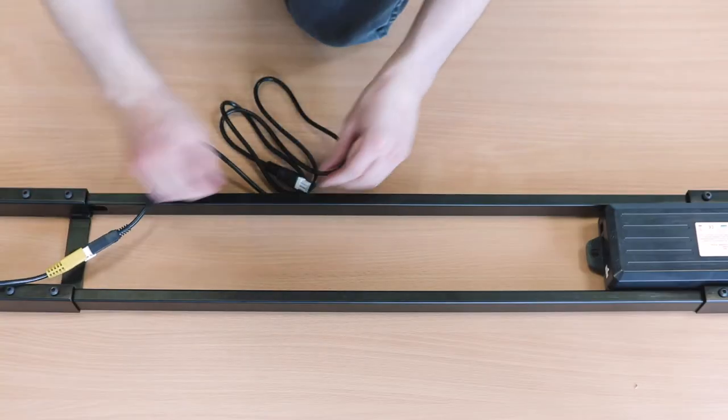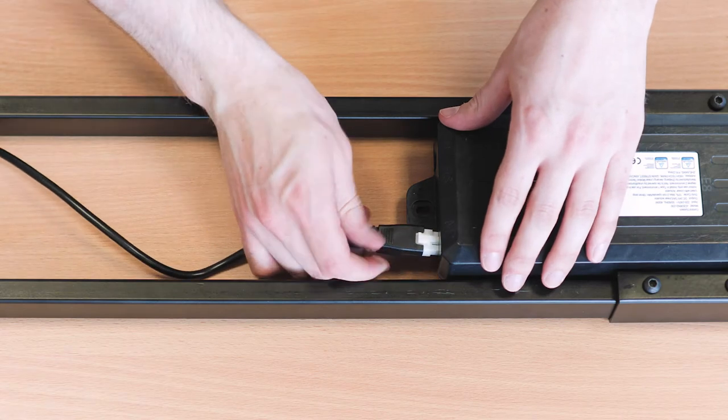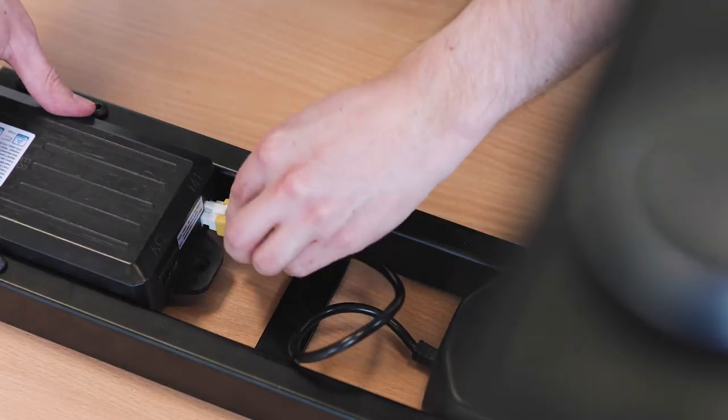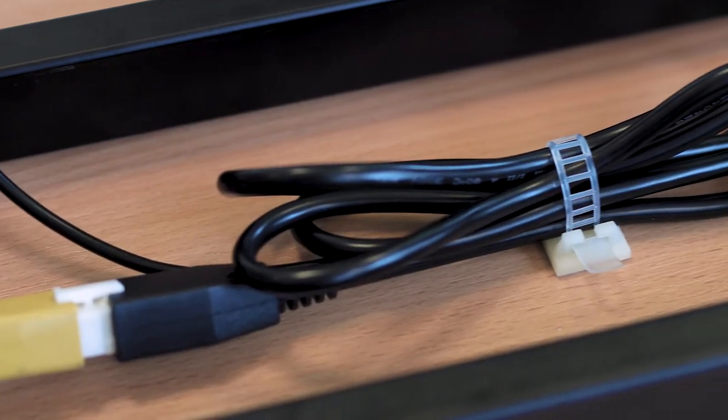Connect all cables to the control box and use the cable ties to secure it into place. You can also purchase a cable basket or cable spine to help with your cable management.